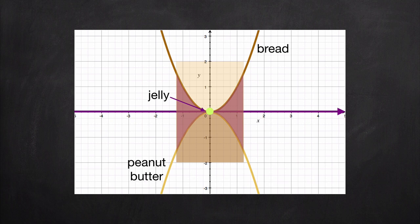If jelly is greater than or equal to peanut butter and less than or equal to bread, then the only possible value of jelly at x equals zero is zero. Which means peanut butter and jelly and bread all occupy the same space at the same time, which makes for one delicious sandwich and a great analogy for the sandwich theorem.